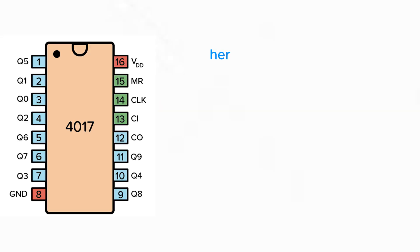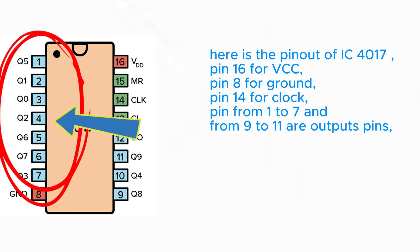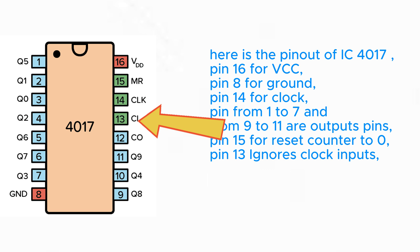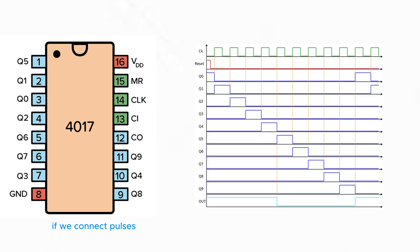Now we will explain the main components. Here is the pinout of IC 4017. Pin 16 for VCC, pin 8 for ground, pin 14 for clock. Pins from 1 to 7 and from 9 to 11 are output pins. Pin 15 for reset counter to 0. Pin 13 ignores clock inputs. If we connect pulses to clock pin 14, the output of every output pin will generate pulses as you see in the chart.